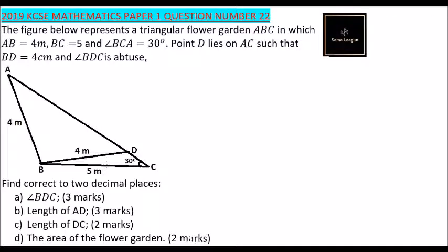Question number 22. We are told the figure below represents a triangular flower garden ABC in which AB equals 4 meters, BC is 5 meters, and angle BCA equals 30 degrees. Point D lies on AC such that BD equals 4 centimeters. We have the figure here.